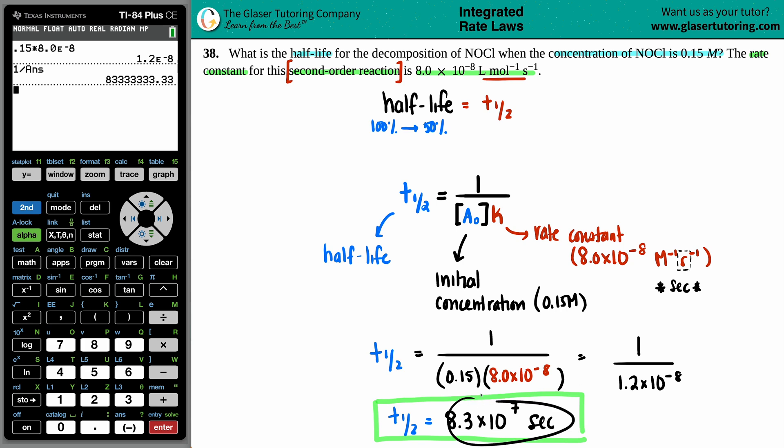That means that's the amount of time that needs to pass to get that NOCl to break down into 50%. In essence, you're taking your 0.15 molarity and breaking it down into whatever that is divided by two. But that's it.